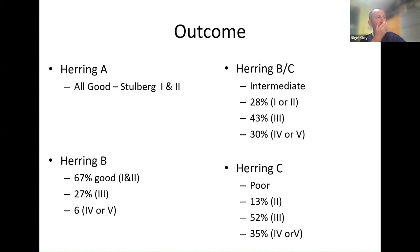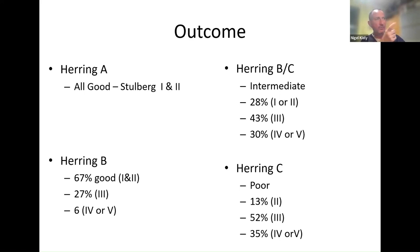Looking at outcomes from the classification: Herring A — well-preserved — results are generally good long term. Herring B — about two-thirds good outcomes. Going down to Herring C, results are generally quite poor long term in terms of the shape of the hip. The Herring classification does give us some idea about what might happen in the future, which can be useful for prognosis.